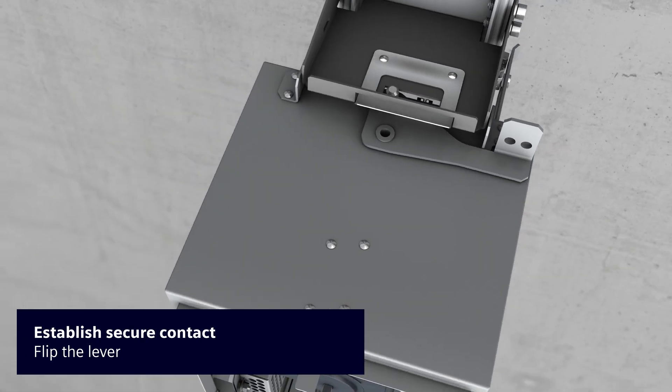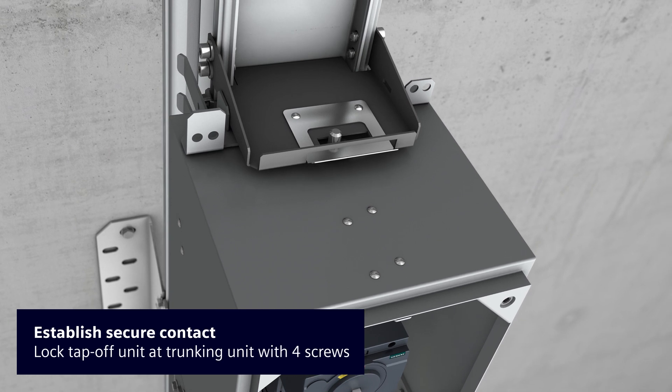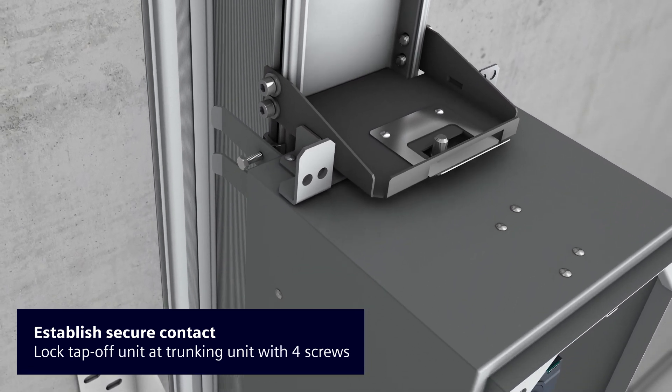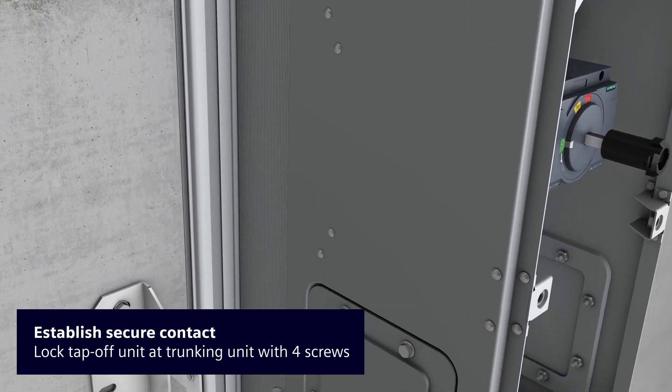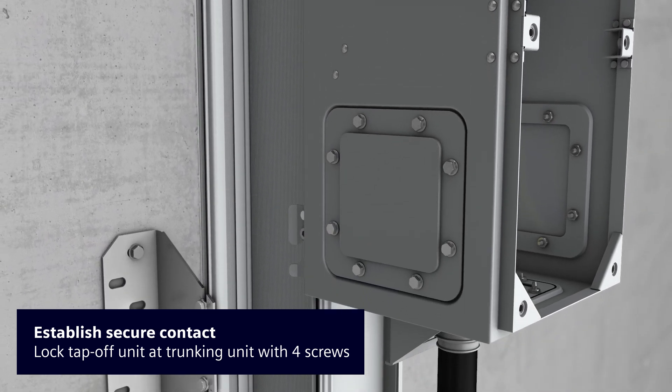Where used, remove the optional lock from the lever and then move the lever to its end position. This action will pull the unit to the busbar and establish the electric connection with the trunking system.